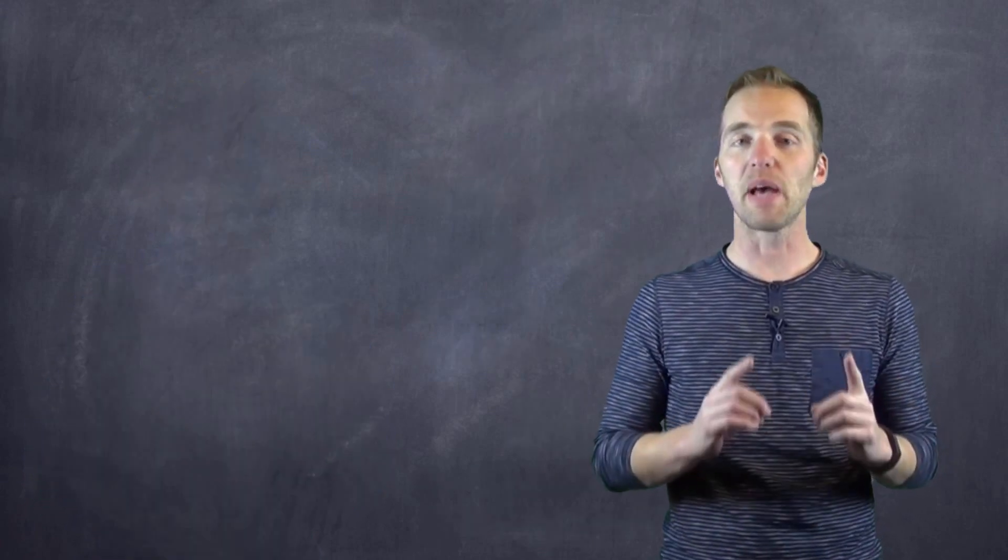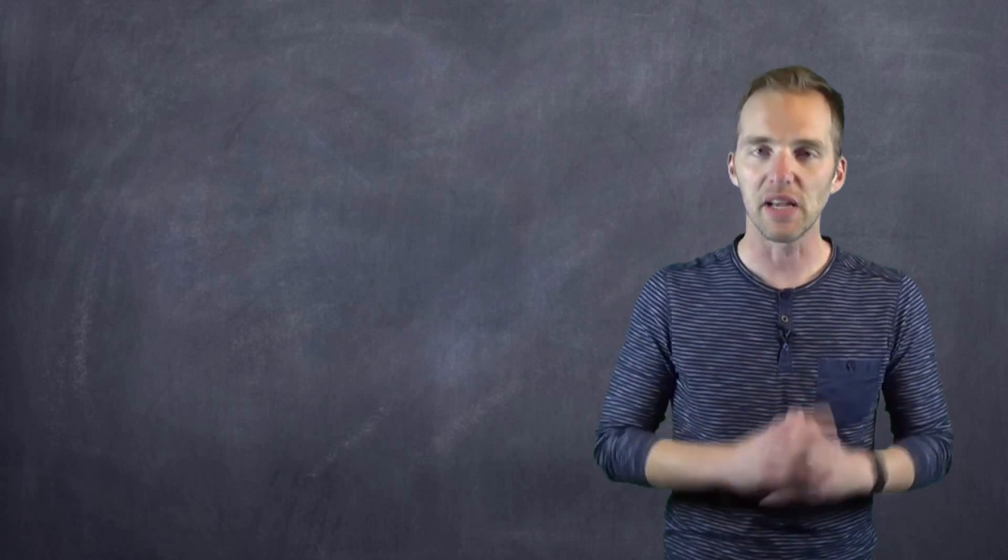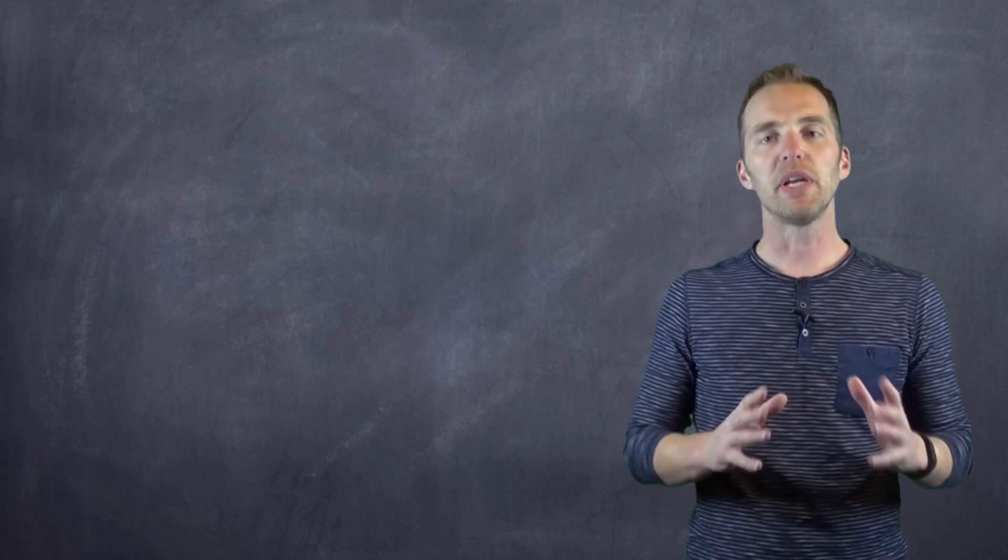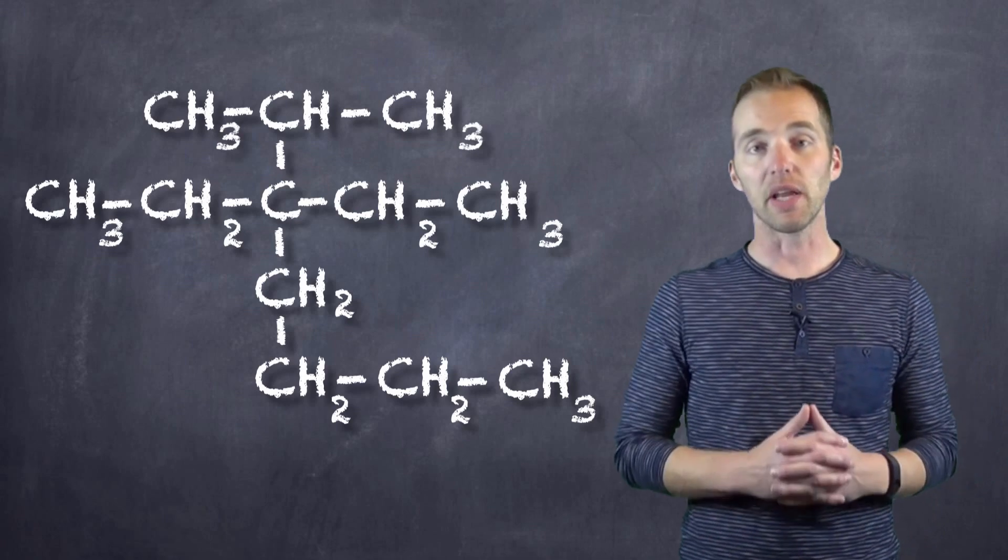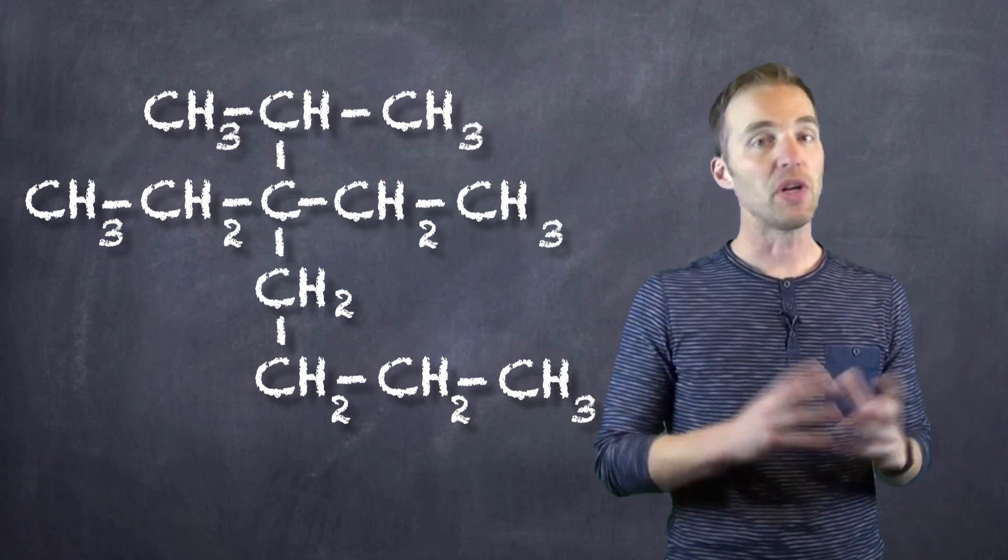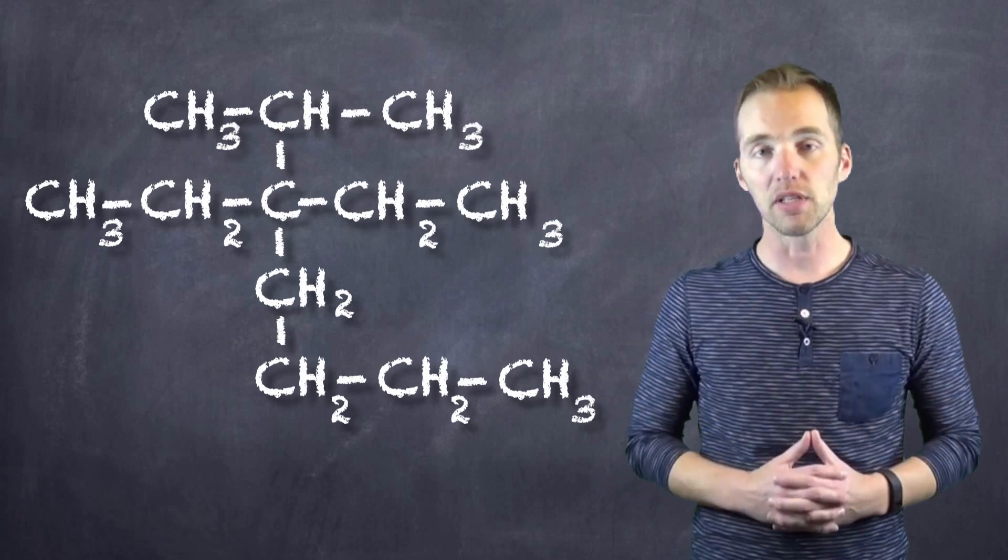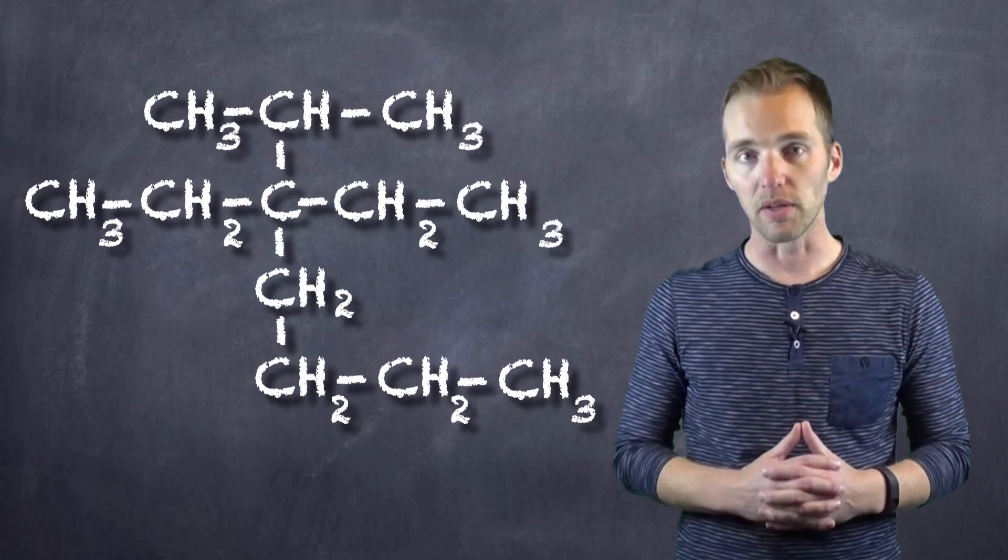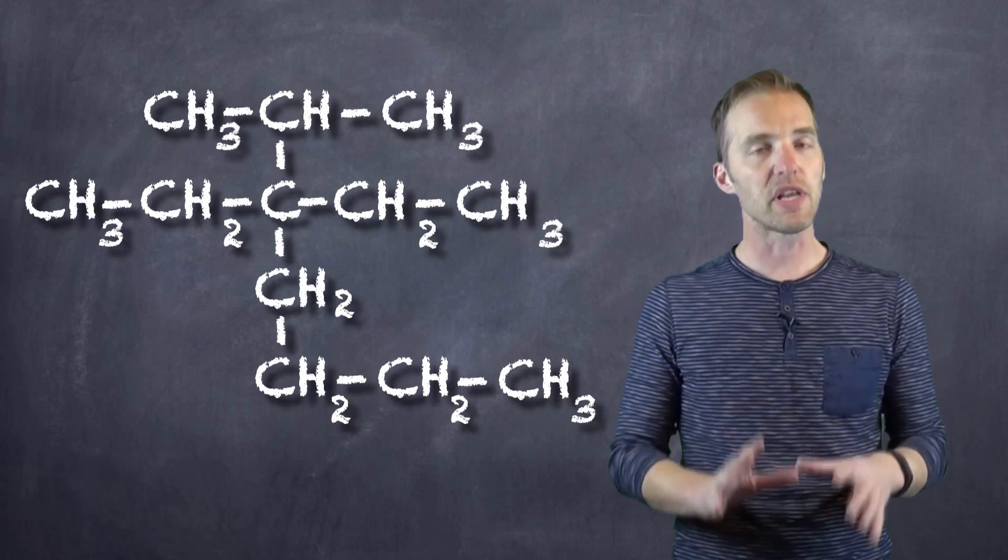So as with most things, I think the best way to go about doing this is to take a look at an example. So here we have a branched chain alkane. We know it's a branched chain alkane because it's branched, and we know it's an alkane because all of the bonds between adjacent carbons are single bonds.